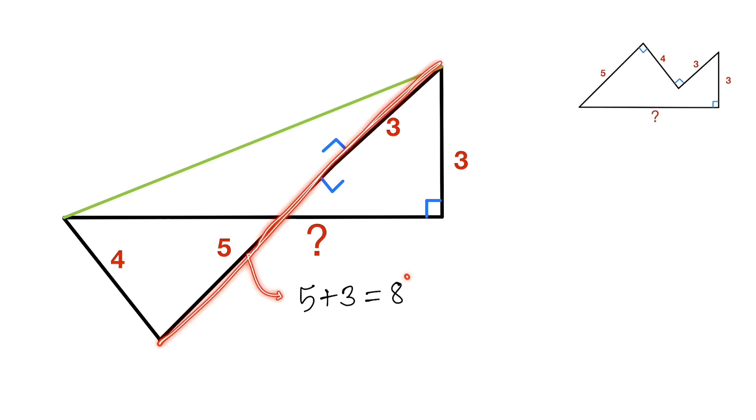So by Pythagorean theorem, this side is square root of 4 squared plus 8 squared, which is equal to square root of 80.